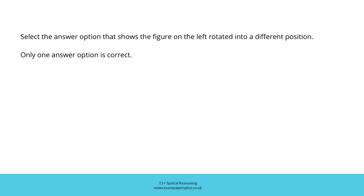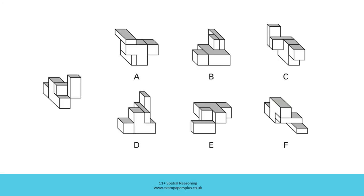Now you can try a second, similar question. Select the answer option that shows the figure on the left rotated into a different position. Only one answer option is correct. In order to answer this second question, you're going to consider this figure, look at how those blocks go together, and think about how that figure would look if it rotated around. The resulting rotated version is represented by one of these six answer options. When you're ready, pause the video and try to work out the right answer within 30 seconds, then resume to check your answer together.